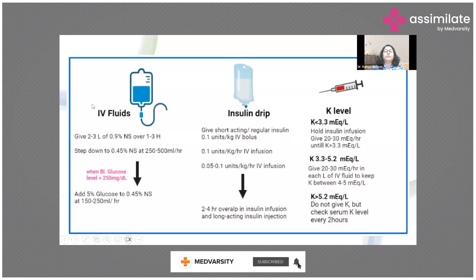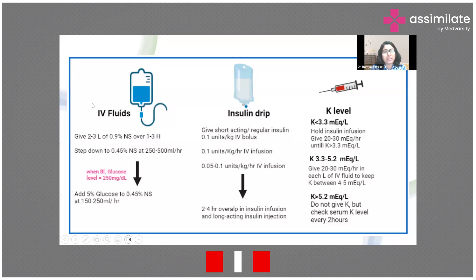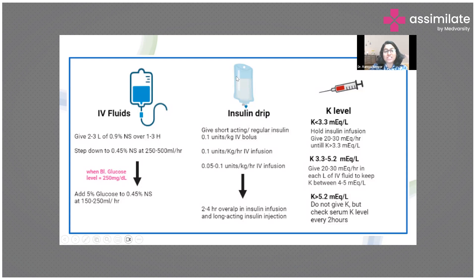Management of DKA in broad terms: first, IV fluids are critical since the patient is dehydrated. Initially, over the first one to three hours, give two to three liters of normal saline. After that, reduce to 0.45% half-normal saline. As sugar comes down to around 250 or lower, add 5% glucose and reduce the drip rate. In HHS, ensure adequate rehydration before starting an insulin drip.